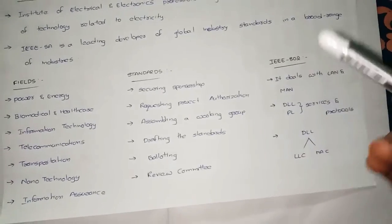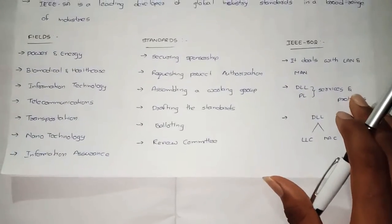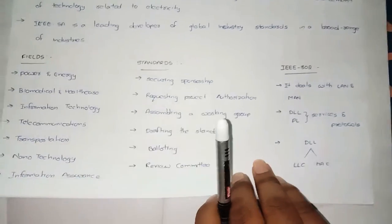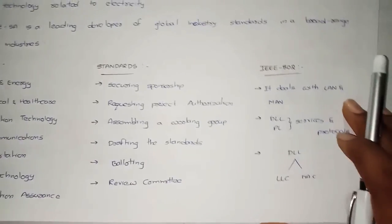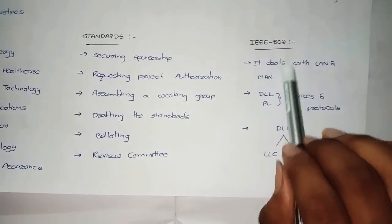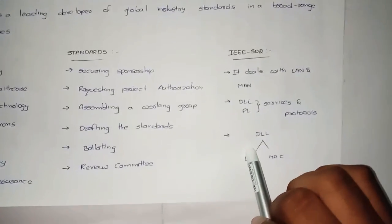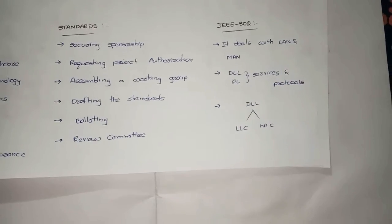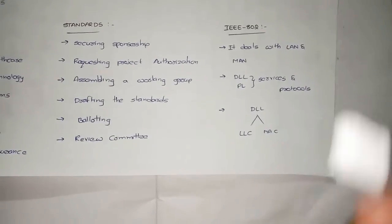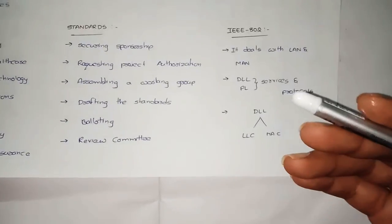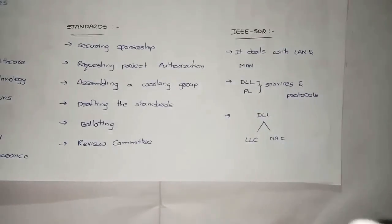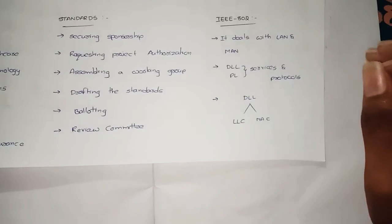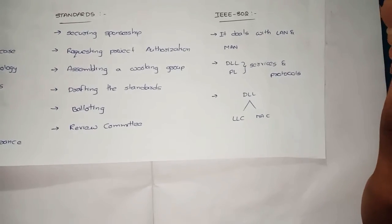The main development that IEEE has undertaken for today's world is IEEE 802. IEEE is a worldwide organization that deals with every network and every field involving new technology. Many of the technologies we use today have been developed from IEEE standards themselves.